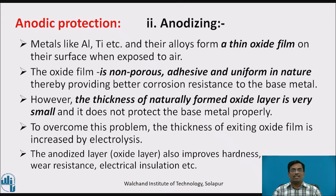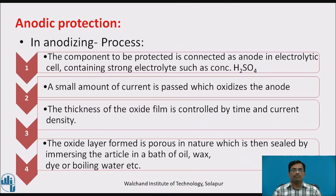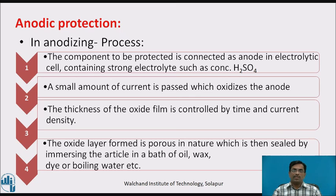To overcome this problem, the thickness of the existing oxide film is increased by electrolysis. The anodized oxide layer also improves hardness, wear resistance, and electrical insulation. In the anodizing process, the component to be protected is connected as the anode in an electrolytic cell containing a strong electrolyte such as concentrated sulfuric acid. A small current is passed which oxidizes the anode. The thickness of the oxide film is controlled by the current and time. The oxide layer formed is porous and is then sealed by immersing the article in a bath of oil, wax, dye, or boiling water.